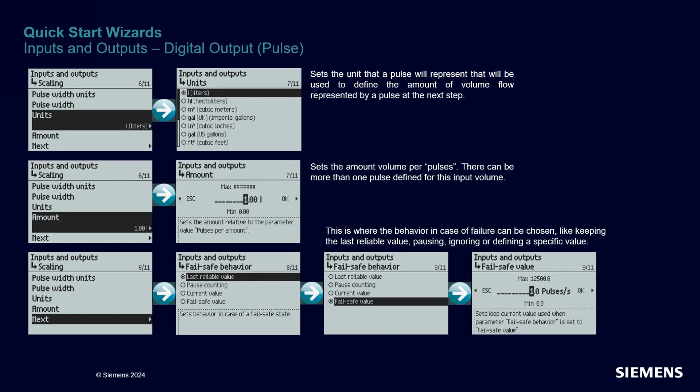Next, you select the meaning of the pulses in terms of units and volume. The last step is to select the desired behavior of the pulse output when the flow measurement is not available. You have four options, from using the last good value to stopping the count or using a failsafe value.